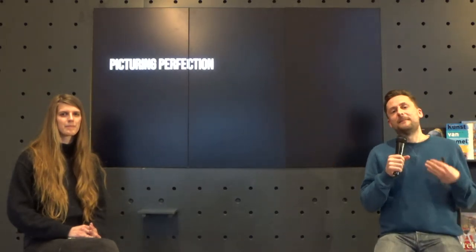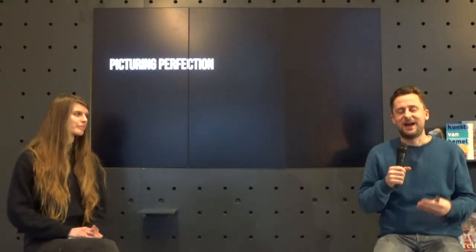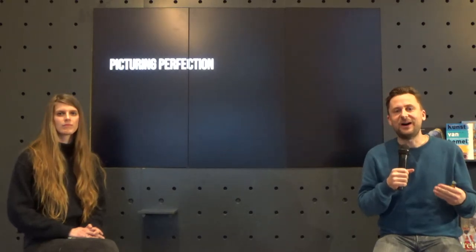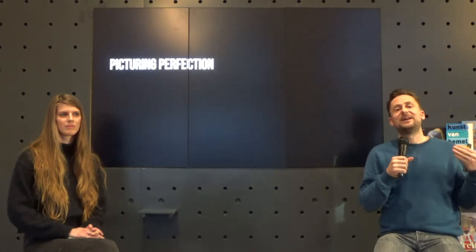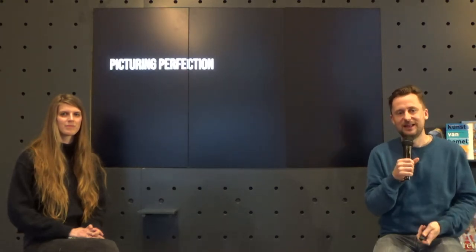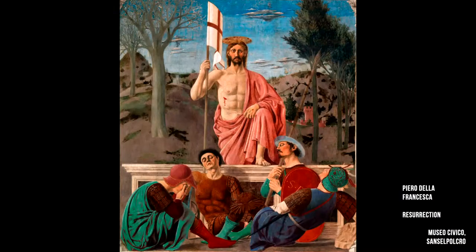We're going to start around the 1500s, but as a historian it's important to set background. Before the Northern Renaissance came the Italian Renaissance. If you want to look at what the image of perfection was, there's no better place to start than this image by Piero della Francesca of the Resurrection — a very clear idea that the perfect was meant to be Jesus. Aldous Huxley called it the greatest painting ever.